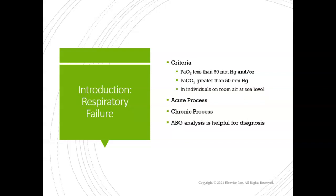Some criteria right off the bat: anytime you have a PaO2 less than 60 and/or a CO2 greater than 50, that individual is considered in ventilatory failure. Those are very clear-cut definitions. When you look at an ABG for a patient and you see either of those two things, you can say that patient is in ventilatory failure and potentially needs some form of ventilatory support.